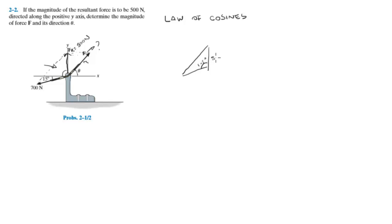You also know that this resultant force is 500, and you know that this force is 700. You want to use the law of cosines when you have something like this: two sides and an angle. Then you can figure out which the other one is pretty easy.